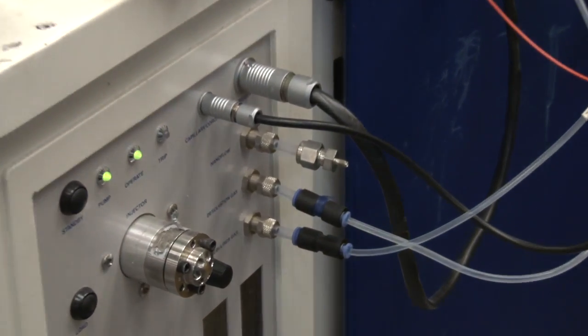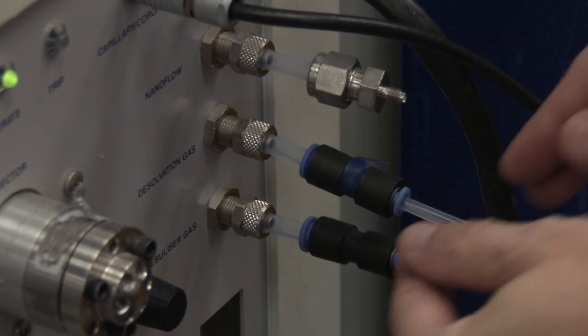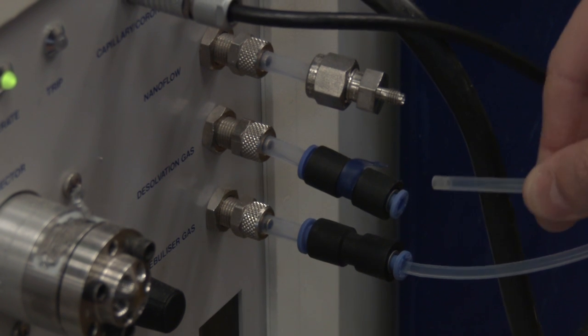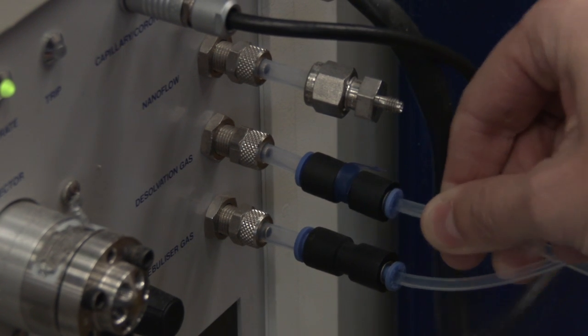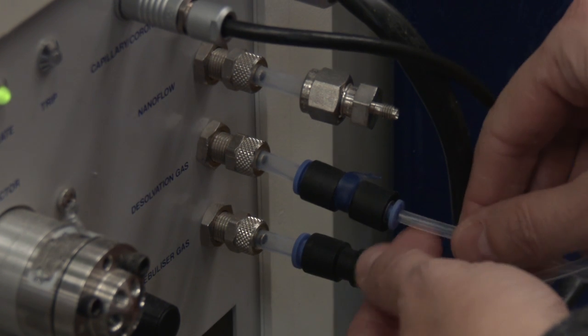Most modern mass spectrometers possess these push and pull connectors on the high-pressure gas lines. They can be removed when the gas is off by pushing the blue end piece towards the back, towards the black center piece, while simultaneously pulling the tubing out in the opposite direction.